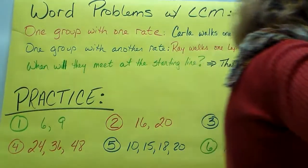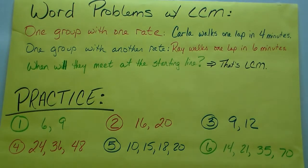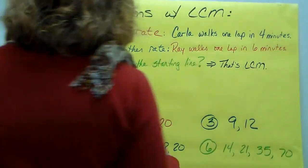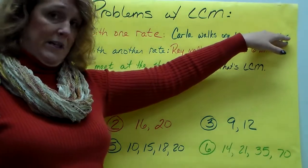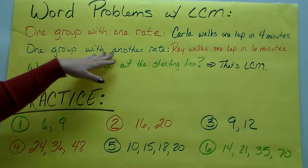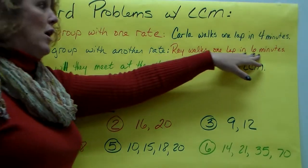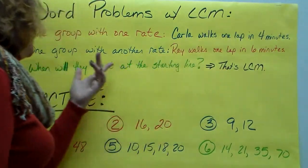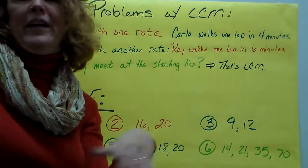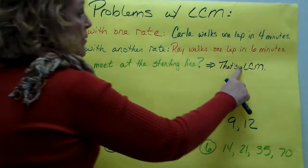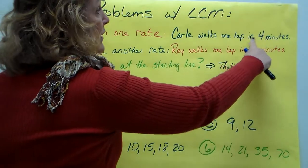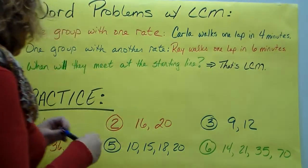All right. Now, word problems with least common multiples. What they look like is you have one group with one rate. Carla walks one lap in 4 minutes. And you have one group with another rate. Ray walks one lap in 6 minutes. And the question is, when will they meet up? Or when will they hit the starting line together? That's least common multiple.